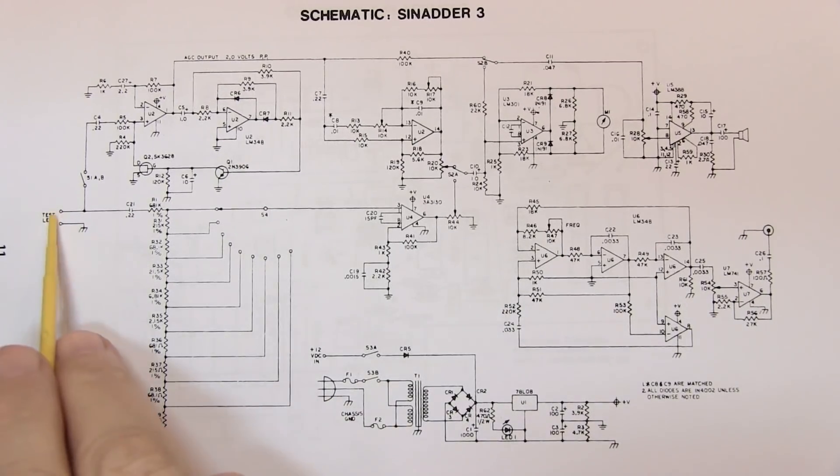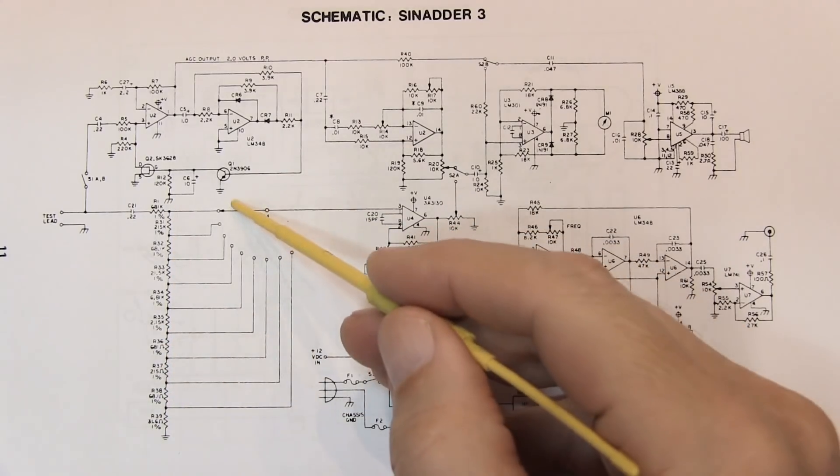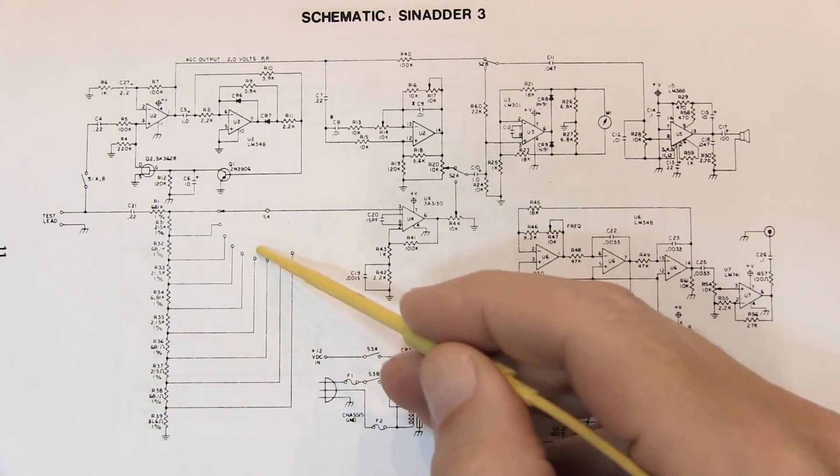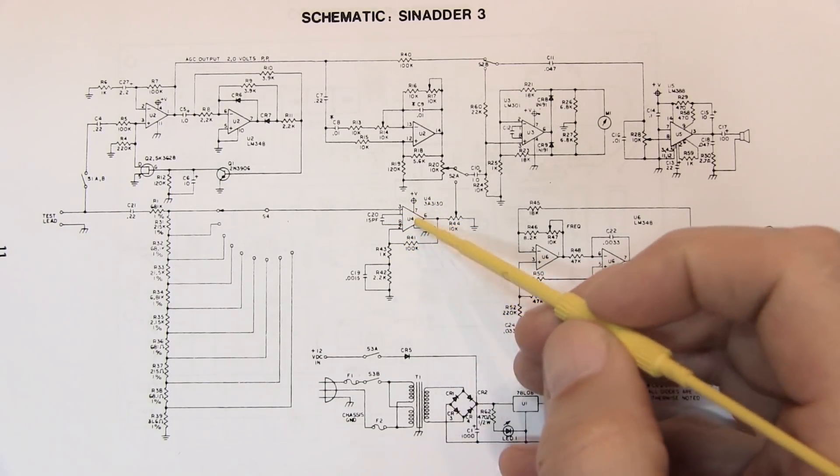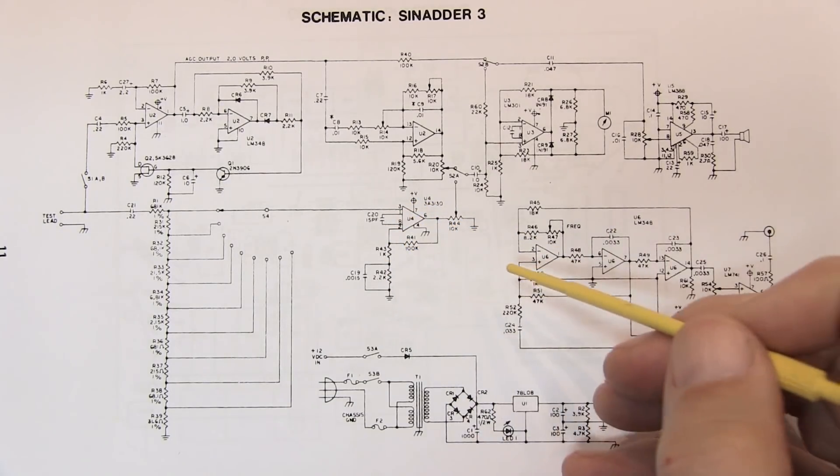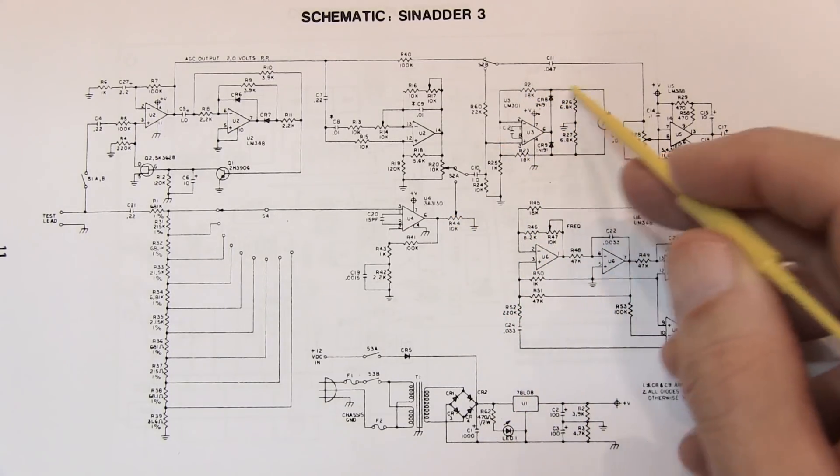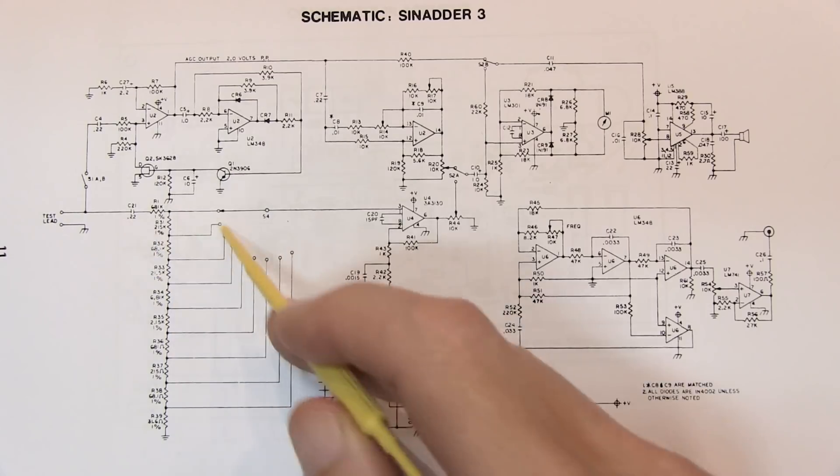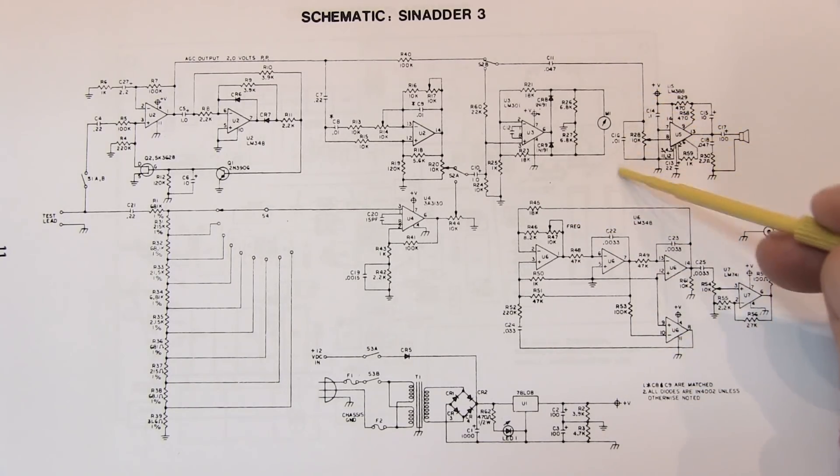Now the AC voltmeter path goes from the test leads into this resistor divider string. This switch selects what voltage range we're measuring, going into the AC voltmeter amplifier, which is just quite simply a non-inverting amplifier. And that goes into the precision rectifier and meter circuit. So there's your AC voltmeter right there. This is the precision audio oscillator right here and its output. And then this is the audio output here, LM386, driving the loudspeaker internally so you can monitor what's going on.